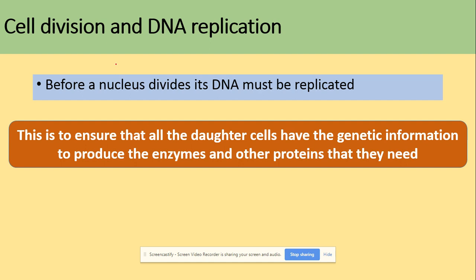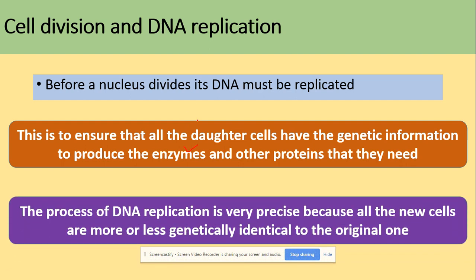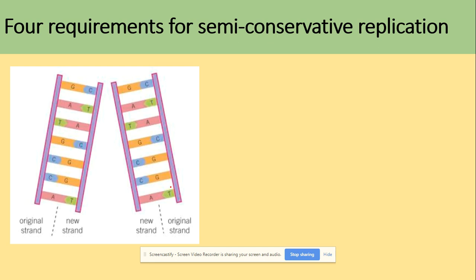This is to make sure that all of the daughter cells have the genetic information to produce, for example, enzymes, because all enzymes are proteins that are needed for the reactions. The process of DNA replication is very specific because all of the new cells are more or less genetically identical to the original one in terms of mitosis.